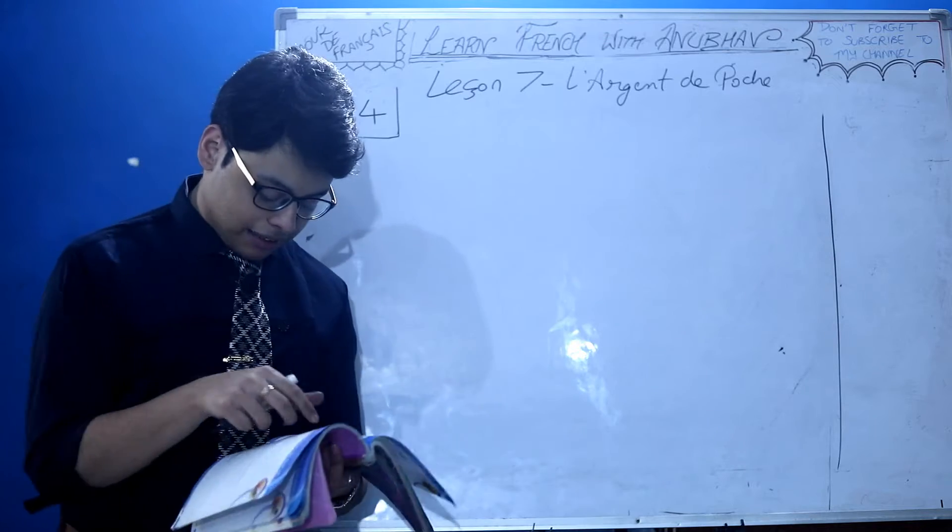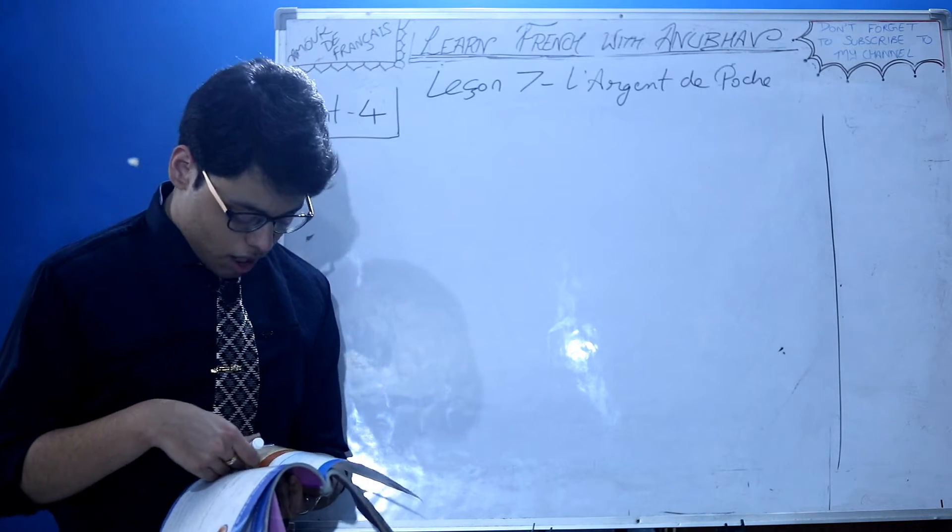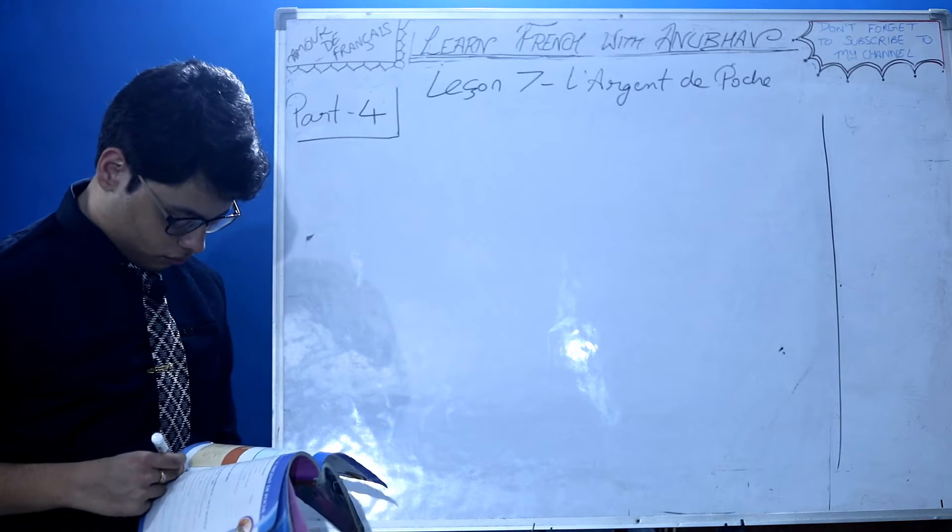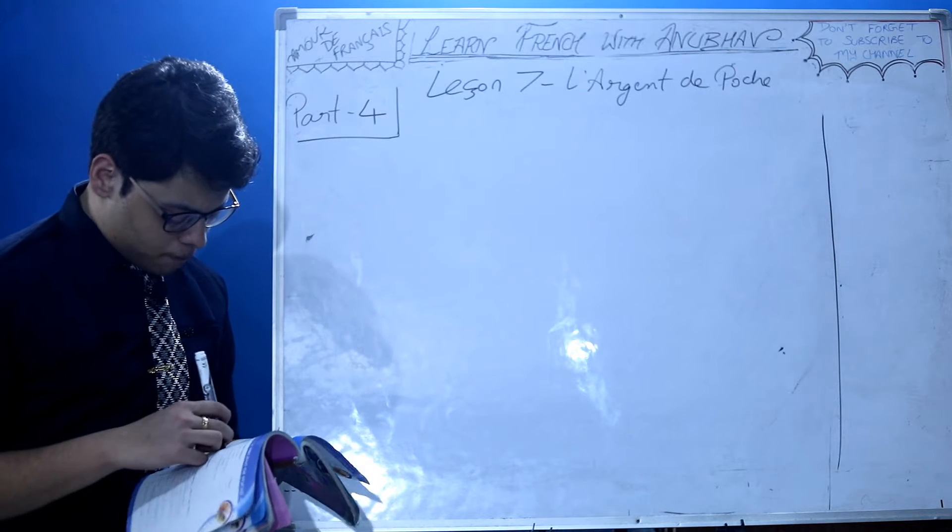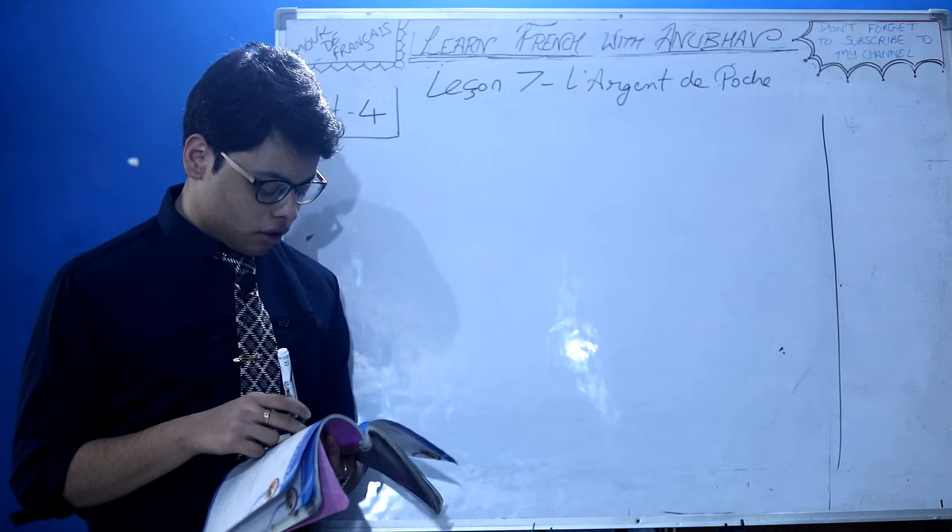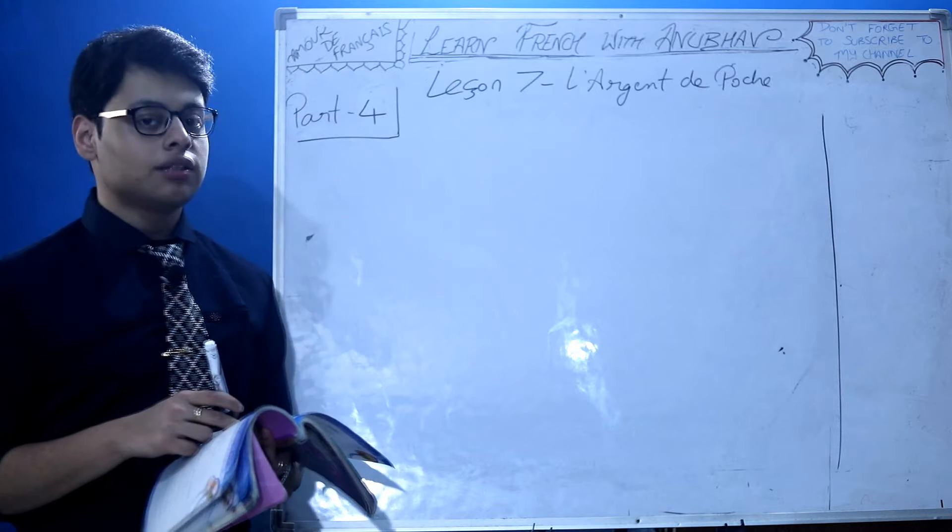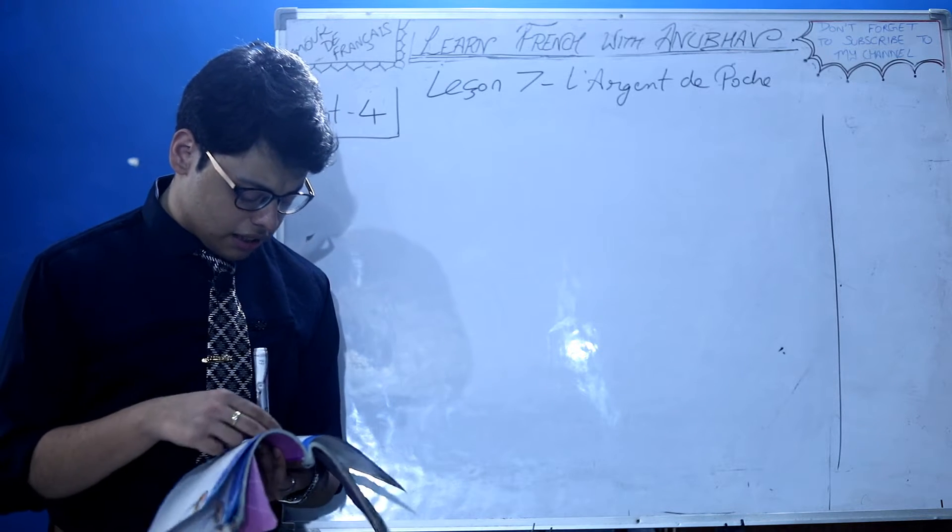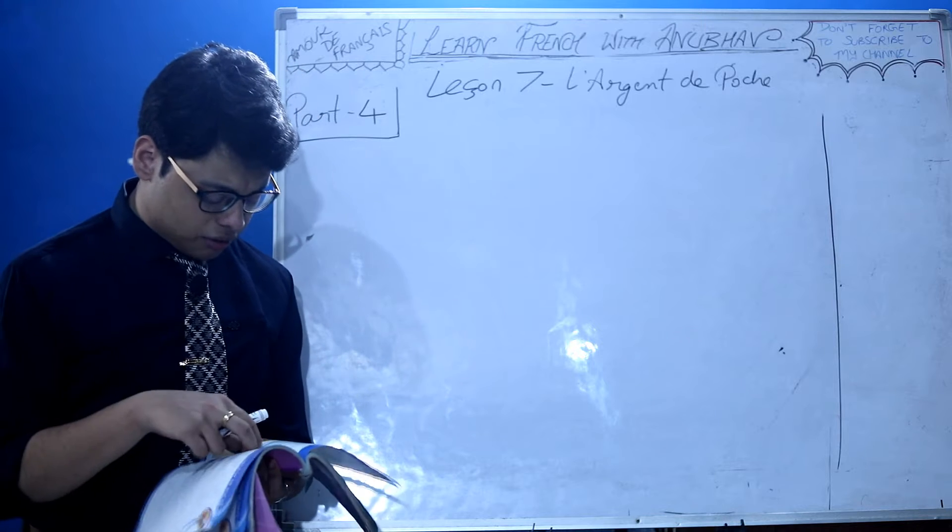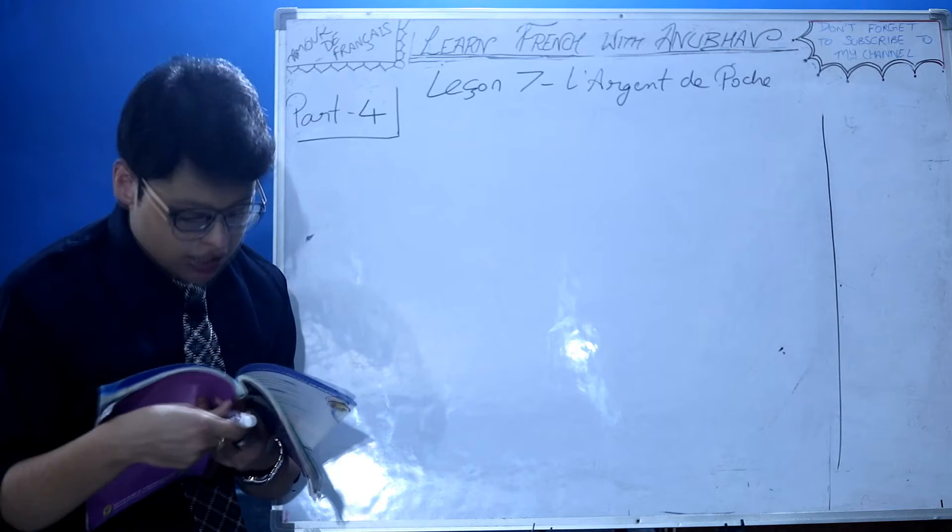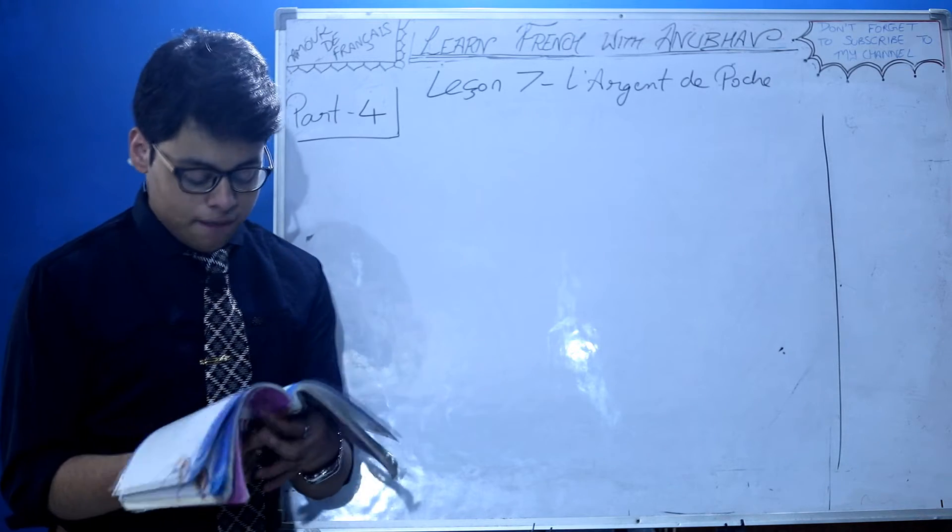There's an advertisement given here for a car, a black car. Let's read this information. À vendre - for sale. Peugeot 3008. It's the model and brand of the car.